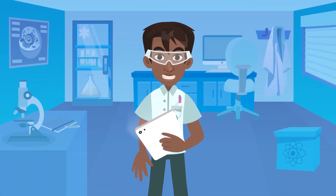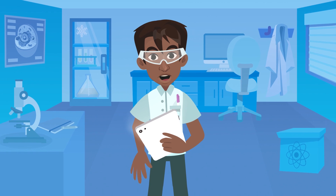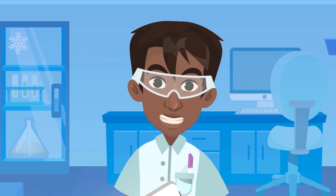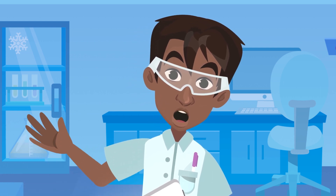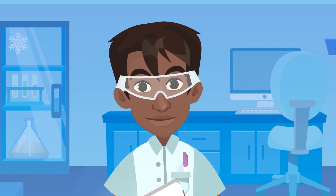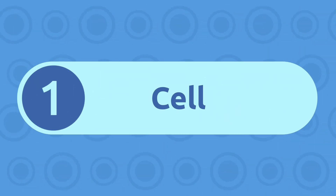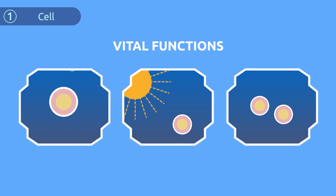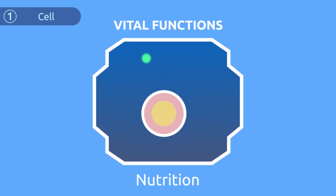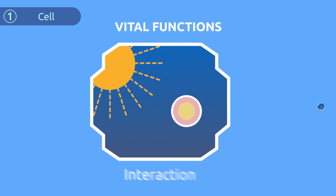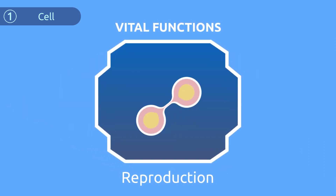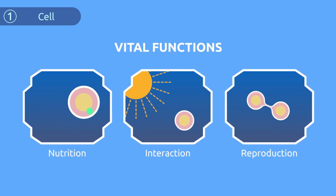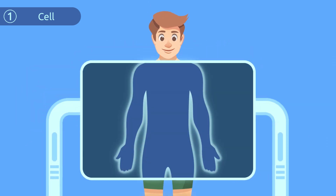The human body is an example of how living beings are organized. Have you ever wondered how our body is organized on the inside? Well, let's get started. The vital functions of a living being are nutrition, interaction, and reproduction. The cell is the smallest basic unit that fulfills the vital functions — we're all made up of millions of cells.